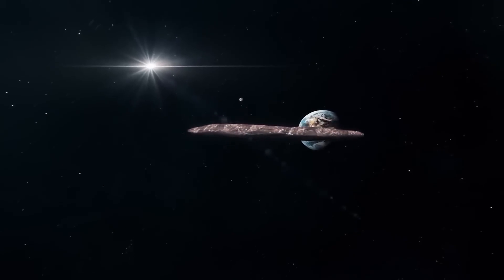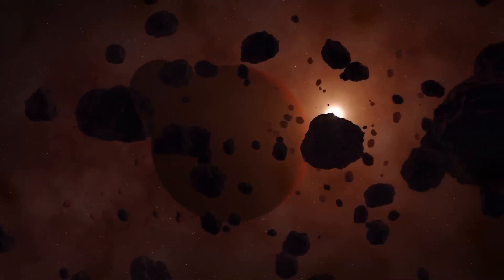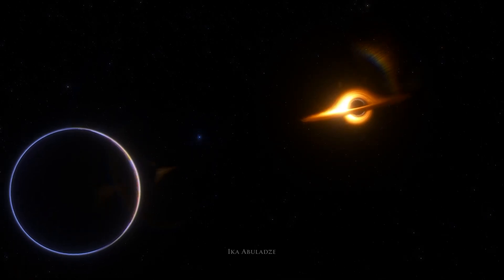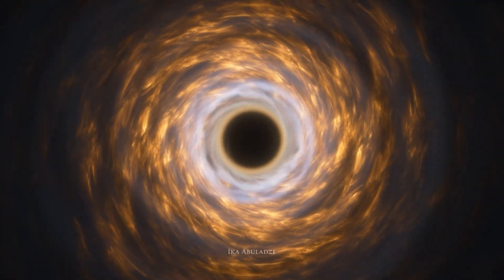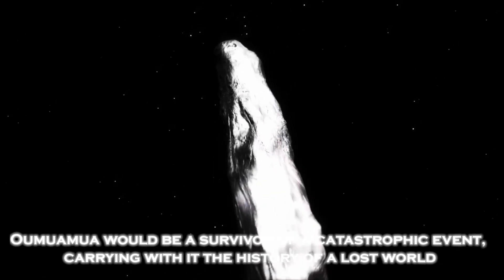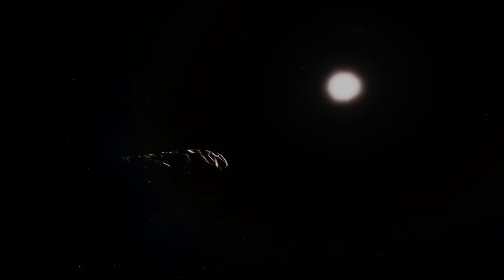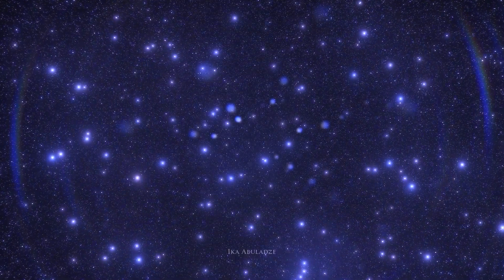One of the most recent theories suggests that Oumuamua could be a fragment of a planet destroyed by extreme gravitational forces. These forces, caused by a massive star or a nearby black hole, could have stretched and torn the planet apart, forming objects with unusual shapes. If this theory is correct, Oumuamua would be a survivor of a catastrophic event, carrying with it the history of a lost world. This opens a new window to study how star systems evolve and change over time, and how catastrophic events can give rise to objects that end up traveling through the galaxy.